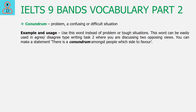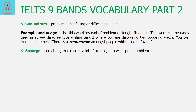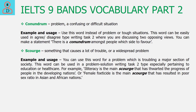The penultimate word of the day is Scourge. This word is used for something which is troubling someone a lot, or a problem which is widespread in society. This word is a perfect fit for problem-solution type writing task 2 where we are discussing a problem, especially if the problem is related to education or healthcare. For example: 'Illiteracy is the main scourge that has thwarted the progress of people in the developing nations.' Or: 'Female feticide is the main scourge that has resulted in poor sex ratio in Asian and African nations.'